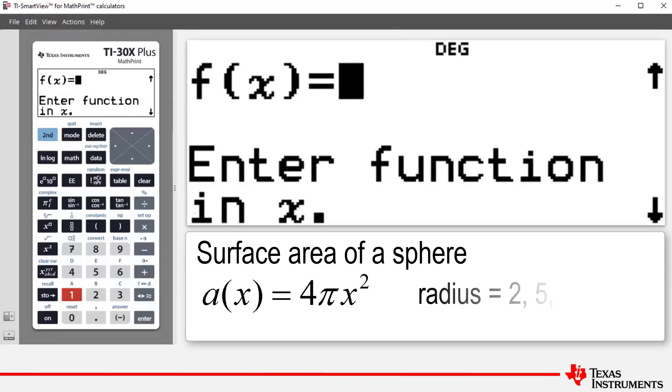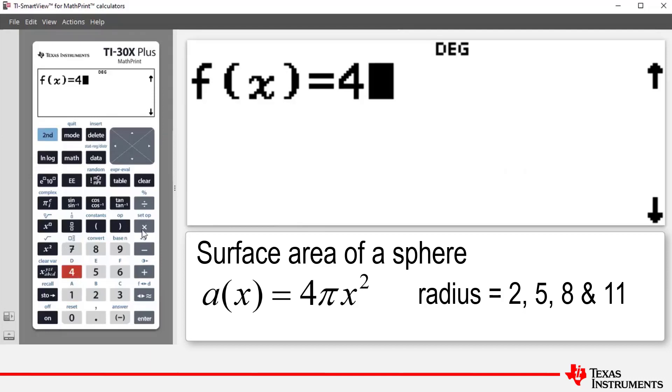They have radii 2, 5, 8 and 11 respectively. So first of all let's enter the function. We press 4 then the multiplication key, then π, then we press the variable key to access x, and then we press x squared.